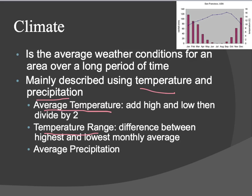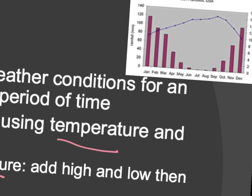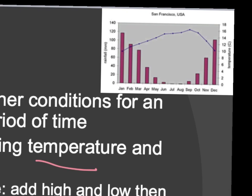Temperature range is the difference between the highest and lowest monthly average. And then the average precipitation — so about how much precipitation, rain, snow, sleet, or otherwise do you get for that month.